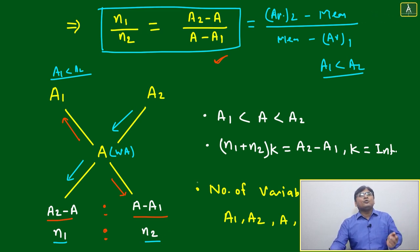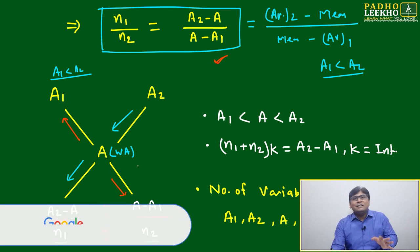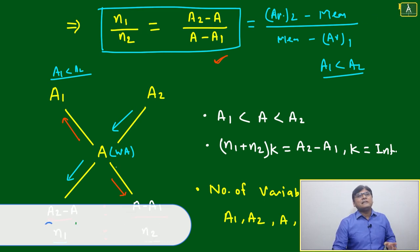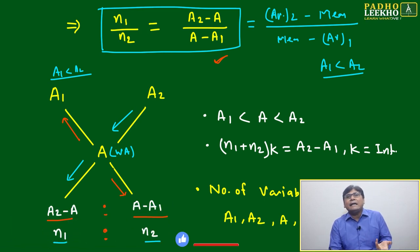n1 ratio n2 will be this one. The exact number can be anything in accordance with the ratio of n1 and n2, but the ratio will always be equal to the difference between A2 minus A and A minus A1.